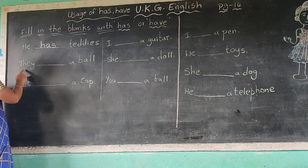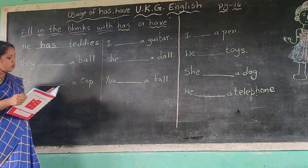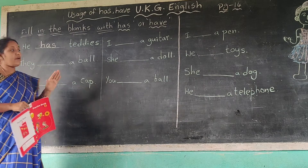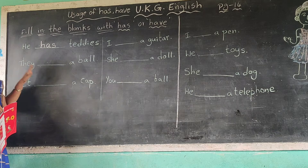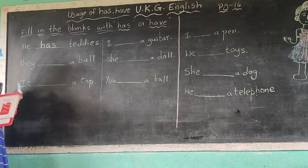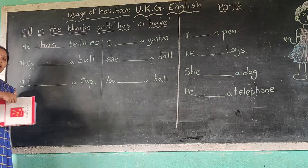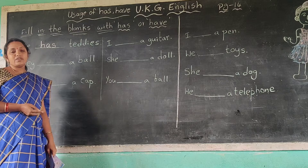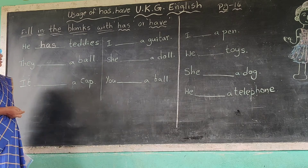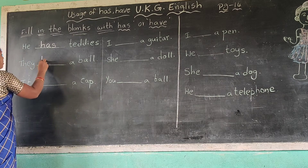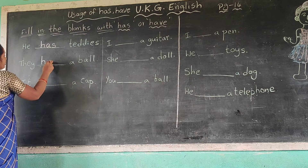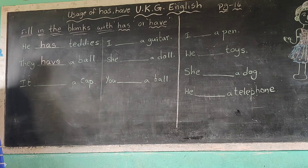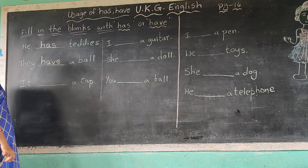What do we have to write here? Has. What is the spelling of has? H-A-S, has. Write here. Has, spelling H-A-S. They have a ball — they have. Has or have? They have. I, we, they — have. H-A-V-E. Write here, have, spelling H-A-V-E.